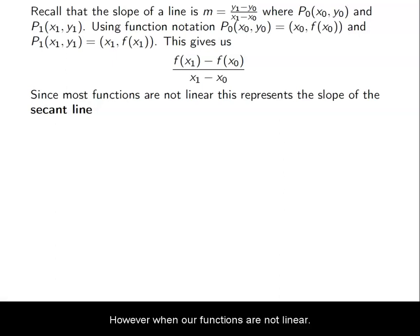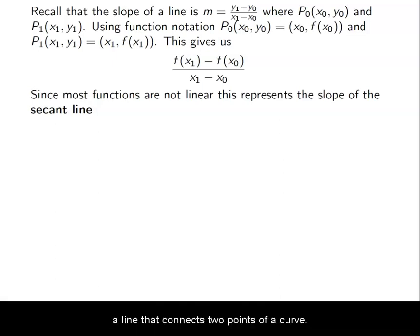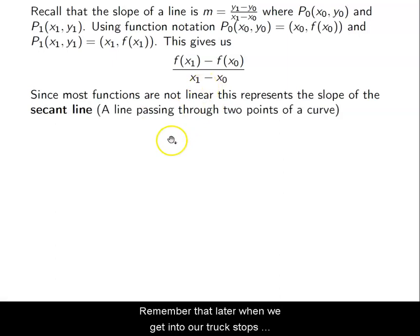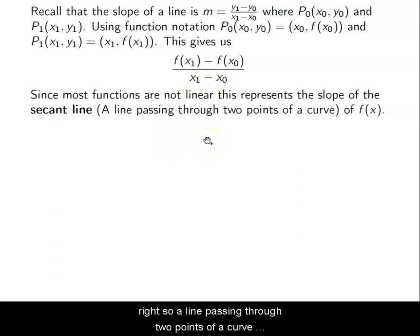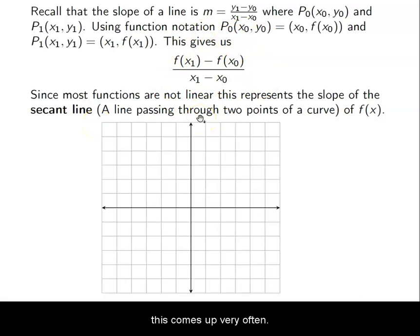However, when our functions are not linear, this represents what's called a secant line. A secant line is a line that connects two points of a curve. Remember that later when we get into our trig stuff — a line passing through two points of a curve. We do talk about the secant line in calculus as well; it comes up very often in calculus one.